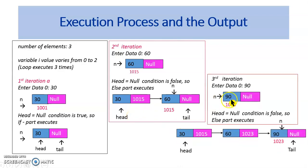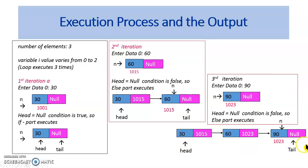Proceeding further towards the third iteration, a new node is created with the data value set to 90 and the next field set to null. As the condition head equal to null is false, the else part executes. Therefore, the next pointer of tail is made to point to n by setting tail.next equal to n. By this, the node with 60 has the address field set to 1023, and the new tail equals n. This is how the list looks at the end of the third iteration. Thus, the list is created.